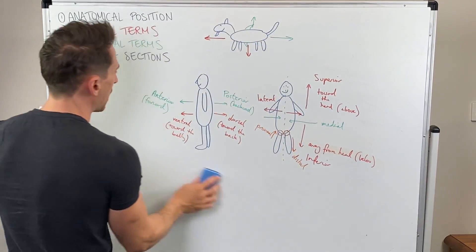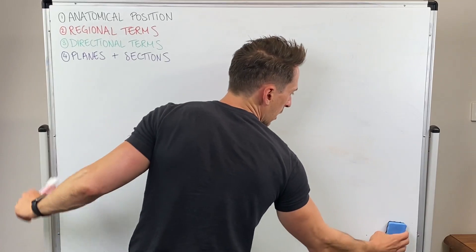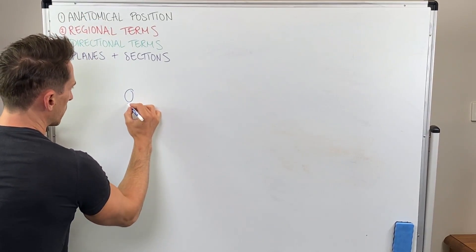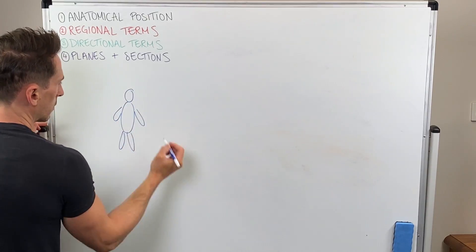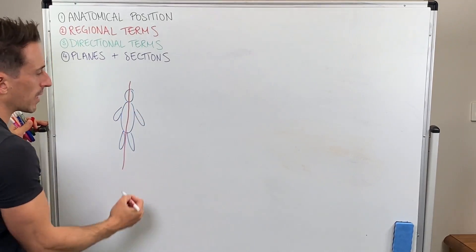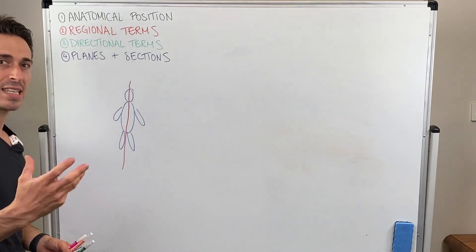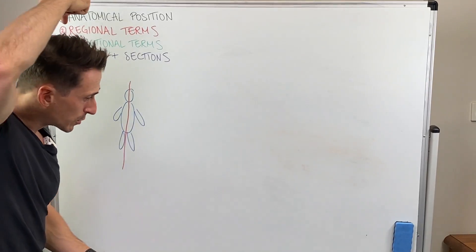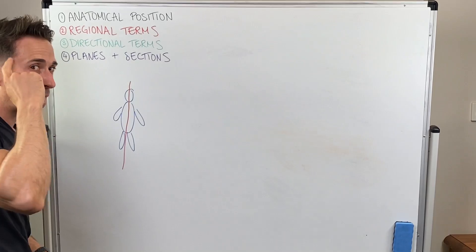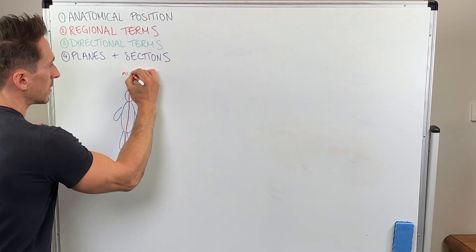The last thing we need to talk about is our planes and sections. Planes are invisible lines that we can draw within anatomy to separate the anatomy into sections. The first imaginary plane is drawn straight down the middle — this plane is called mid-sagittal. It's called mid-sagittal because sagittus refers to arrow; you can see a suture on the skull going straight down the middle. If you were to imaginarily cut somebody down the middle, separating them into left and right sections, that's the mid-sagittal plane.